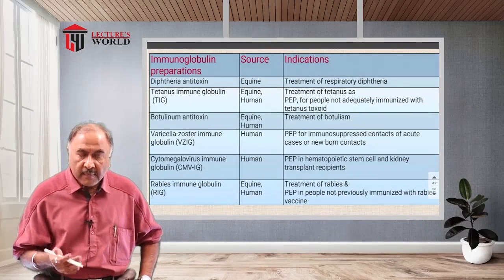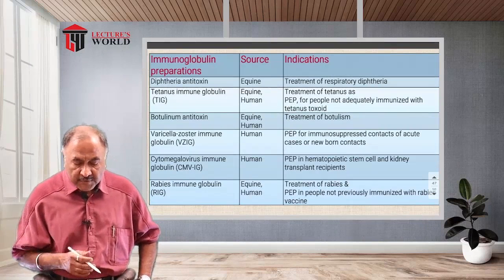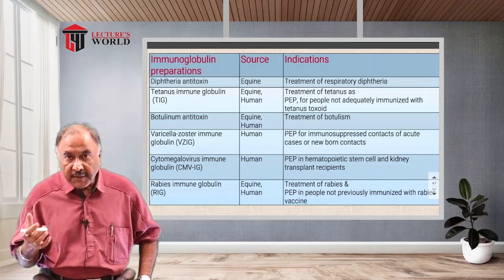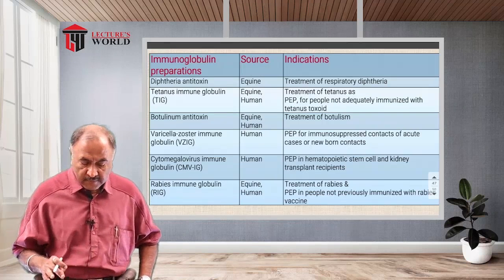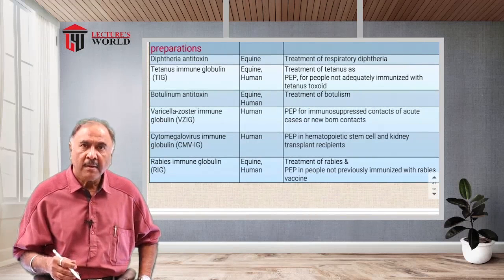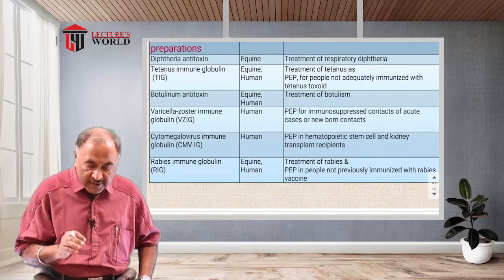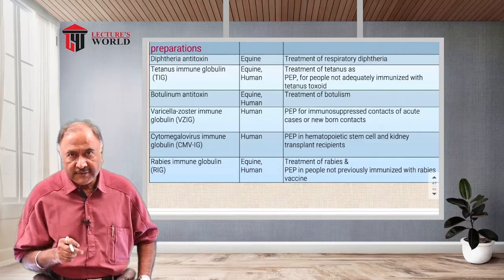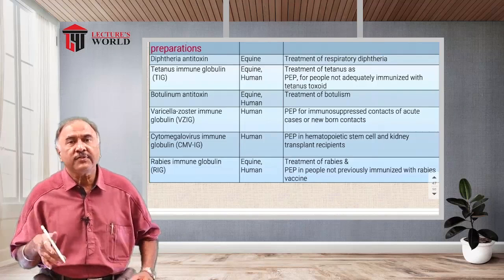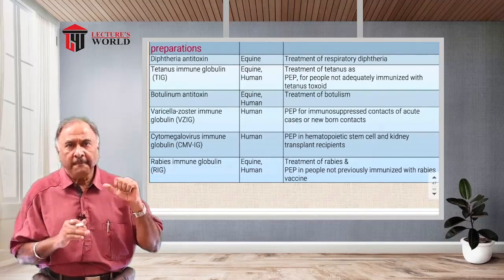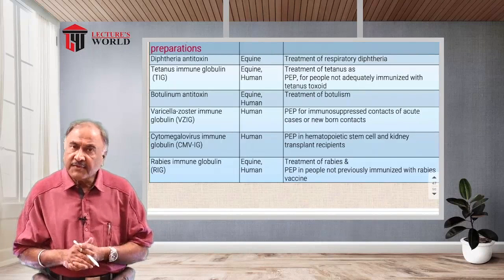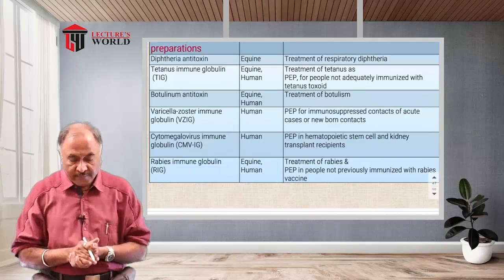Examples of passive immunization include diphtheria antitoxin, tetanus immunoglobulin, botulinum antitoxin, varicella-zoster immunoglobulin, cytomegalovirus immunoglobulin, and rabies immunoglobulin. In some cases, active vaccination also exists for the same disease — for example, tetanus toxoids for active immunity versus tetanus immunoglobulin for immediate passive protection, and rabies vaccines for active immunity versus rabies immunoglobulin for immediate passive protection.